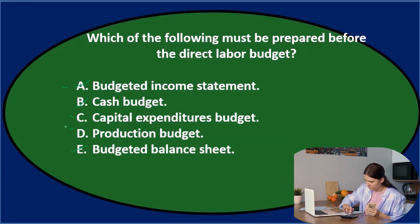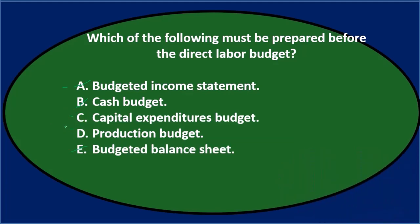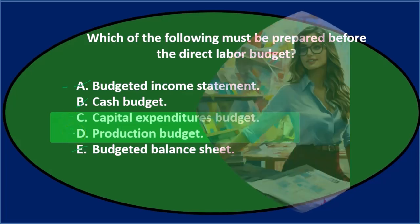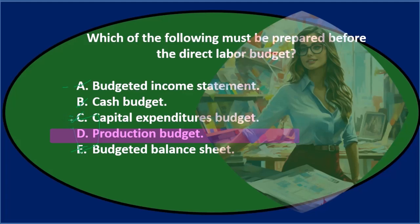Now we're down to C and D. Looking at the order of operations, we have the capital expenditures budget and the production budget. Usually, we do the production budget before the capital expenditures budget, which means capital expenditures is done after production — so it's probably not C. That leaves us with our final answer: D, the production budget, must be prepared before the direct labor budget.